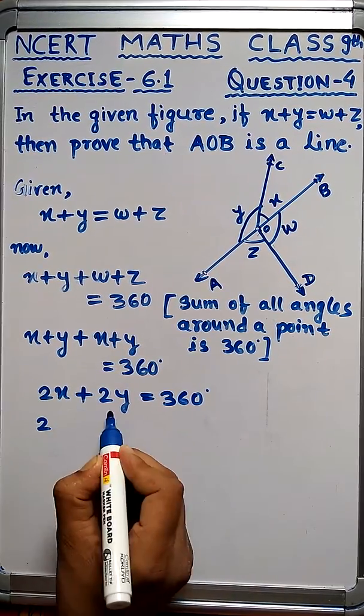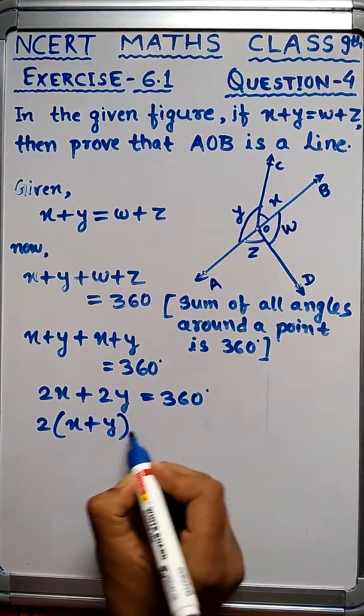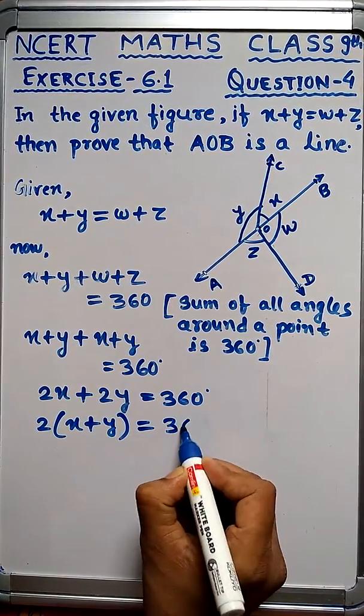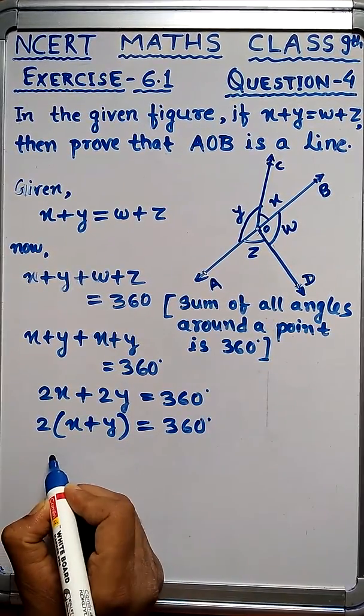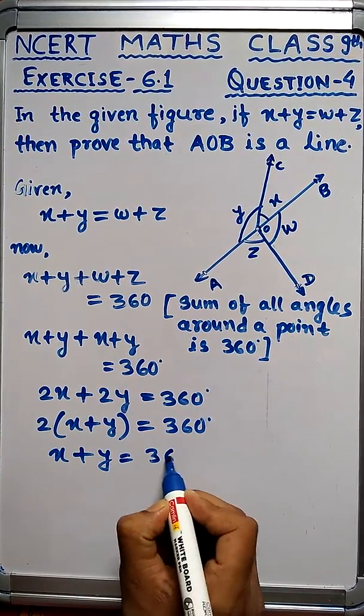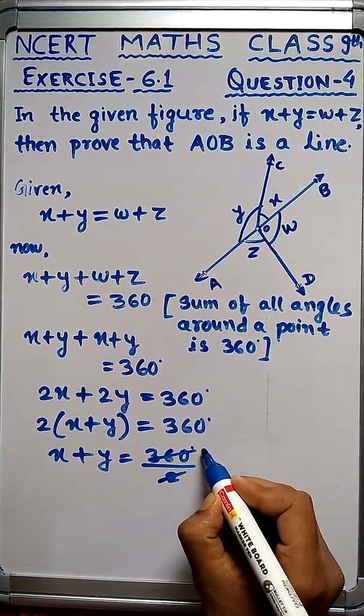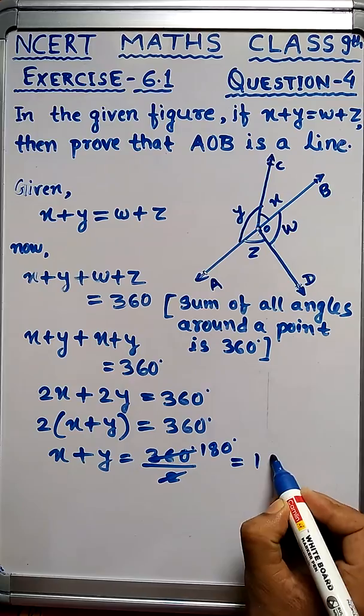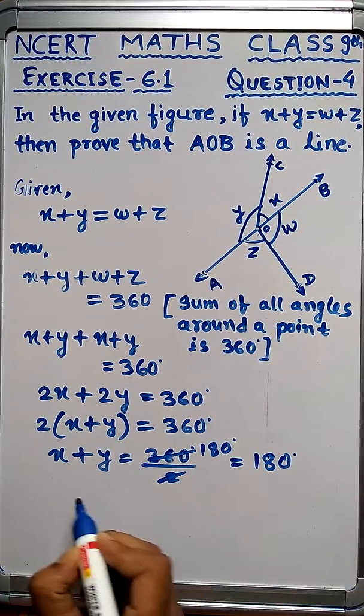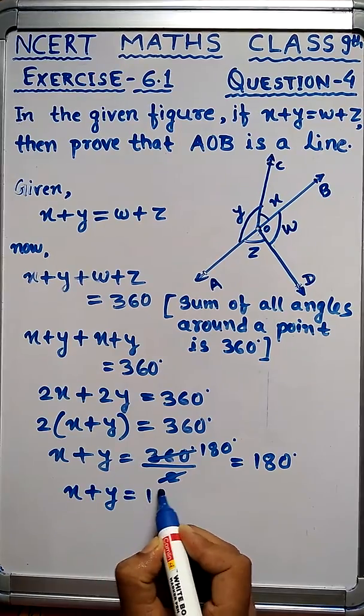We can take 2 common: 2 times x plus y equals 360 degrees. Dividing both sides by 2, we get x plus y equals 180 degrees.